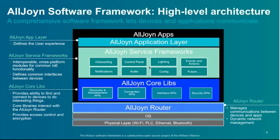AllJoin sits at about layer 3.5 on a TCP stack. The software sits on top of all OS communication APIs — whether Android, iOS, Windows desktop, Linux desktop, OS X, or even an MCU. It adds the router on top, which moves AllJoin messages across the network. The router knows what core libraries and applications are connected to it, and knows how to move messages up or over on a given transport to another device.